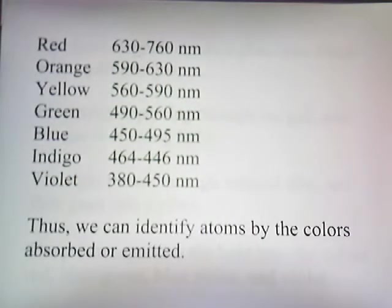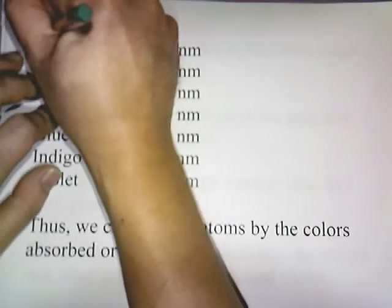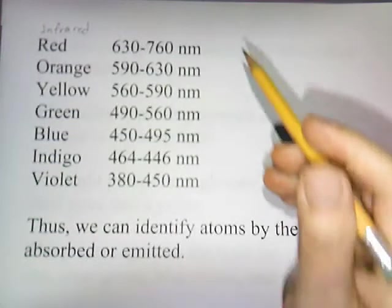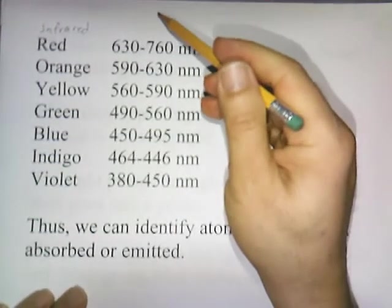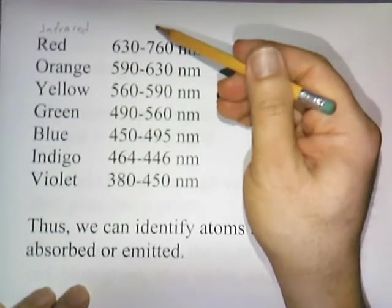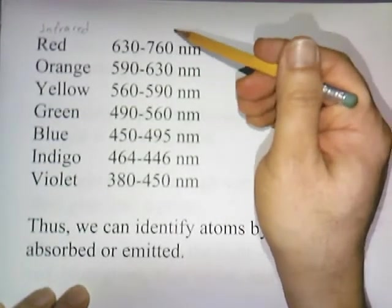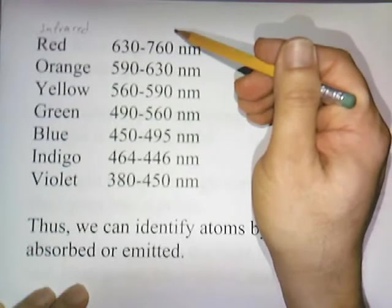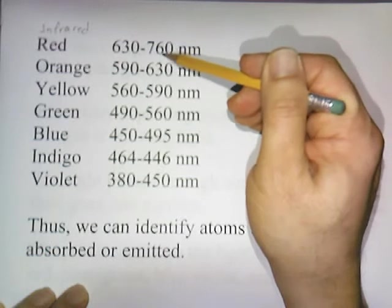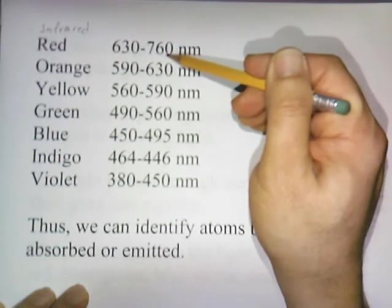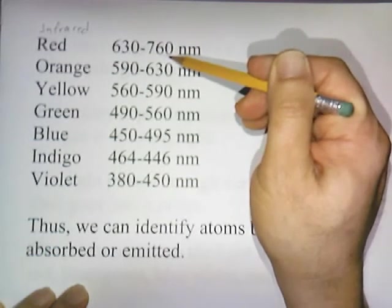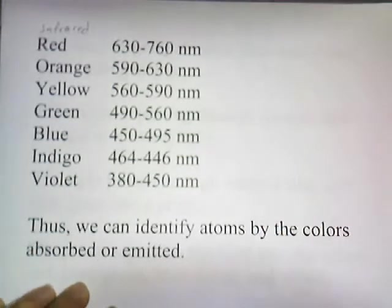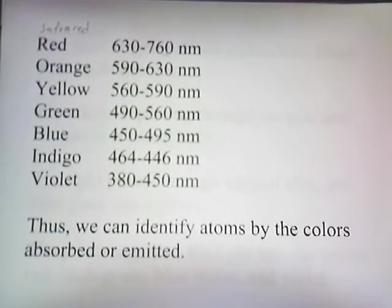There's also something called infrared. We can't see infrared, but infrared photons have wavelengths that are longer than 760 nanometers. So if the wavelengths are greater than 761, 762, and so on, it's infrared light — and we can't see it. You have to use those infrared filters.